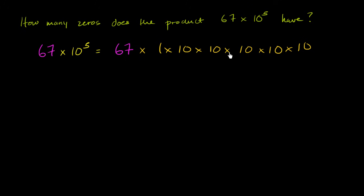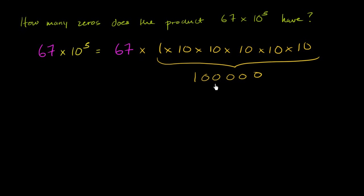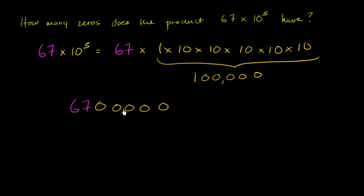So 67 times 1 times 10 times 10 times 10 times 10 times 10. We already figured out that 1 multiplied by 10 five times is 1 followed by five zeros, or 100,000. So 67 times 1 is just 67, and every time you multiply by 10 you add another zero. Multiplying by 10 five times, we add five zeros, giving us 6,700,000.